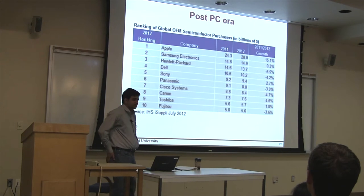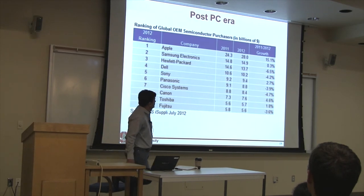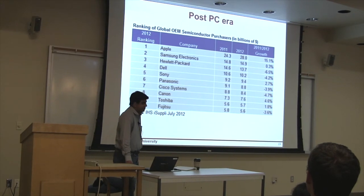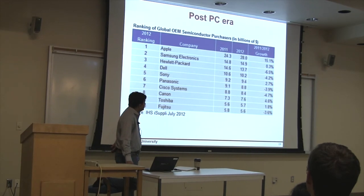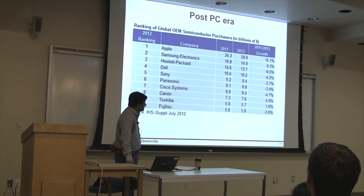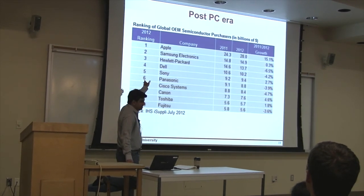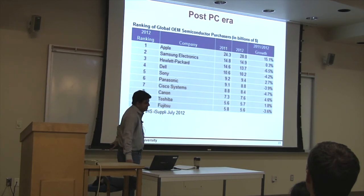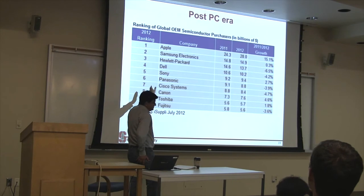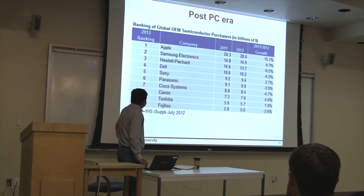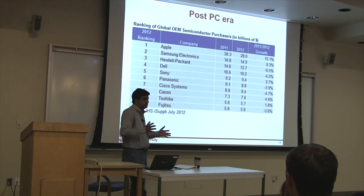Why am I talking about all this? What is this doing to the semiconductor ecosystem? The biggest buyer of semiconductor chips in 2012 — no surprise — is Apple at $28 billion. The chip industry is roughly a $300 billion industry, so roughly 10% of that is purchased by Apple. Their next competitor owns another 5%. Apple and post-PC companies now have a huge influence on the entire semiconductor industry.